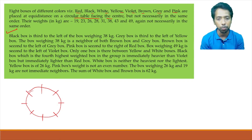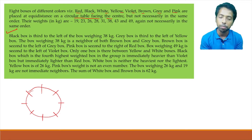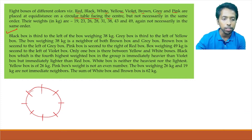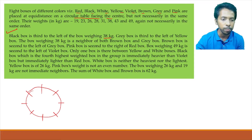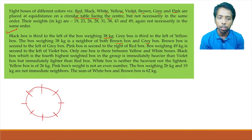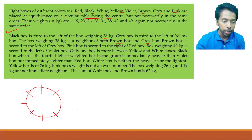We have to find out the connecting statements so that we can avoid possibility cases. We always intend to find some relation in respect of the previous statement already set in our diagram to minimize possibilities. Black box is third to the left of the box with 38 kg. The box with 38 kg is a neighbor of both brown and gray. Brown box is second to the left of gray box.